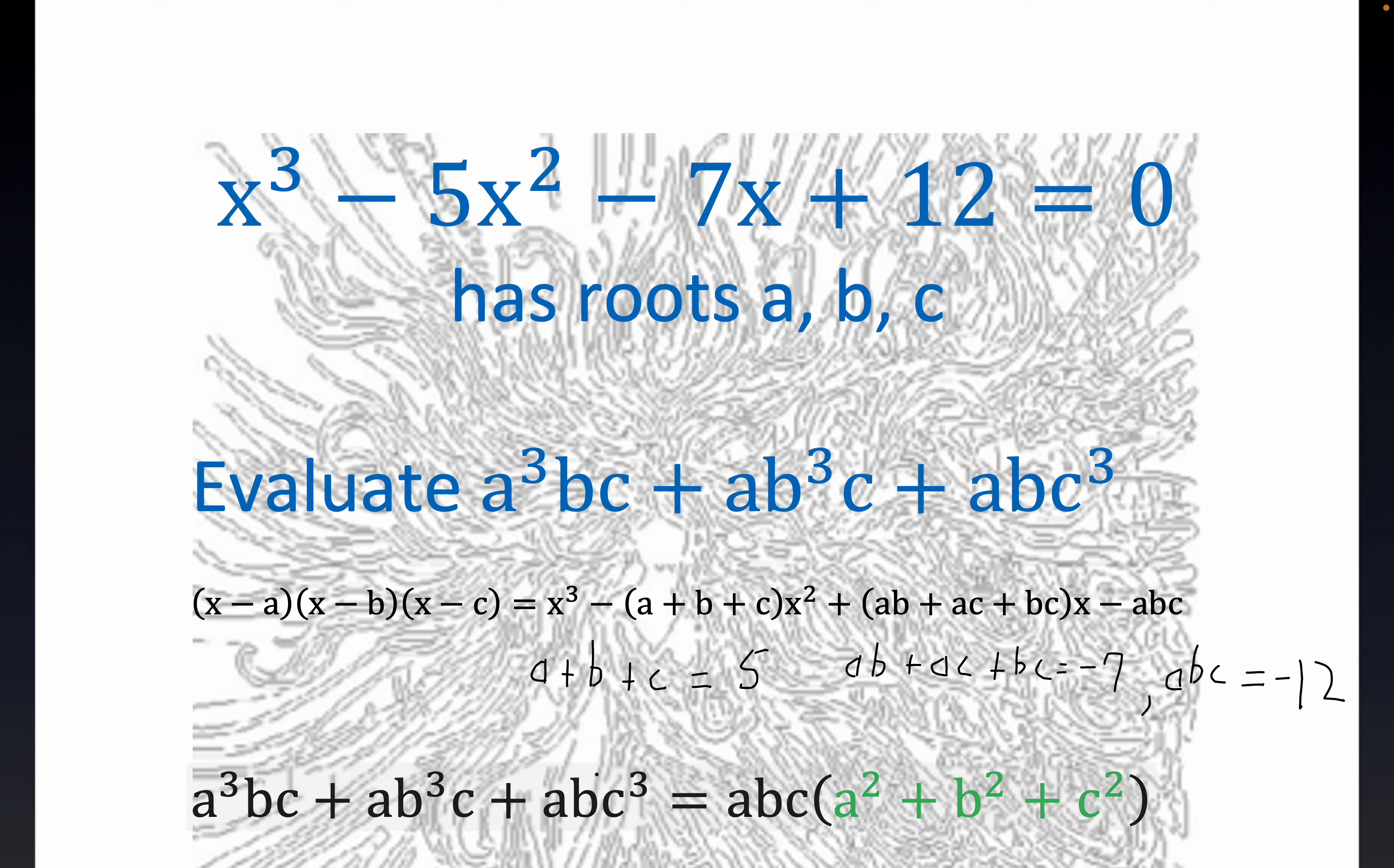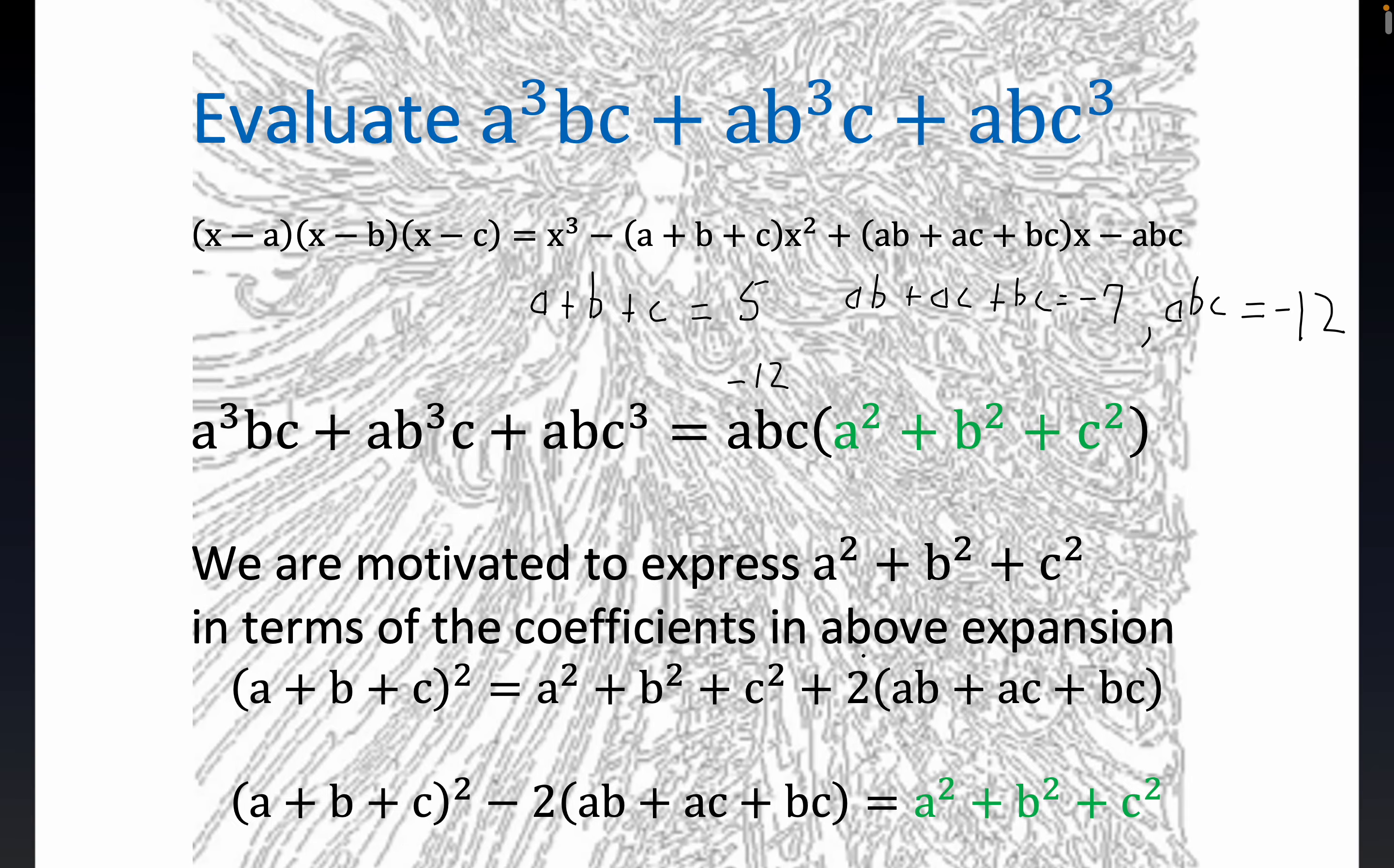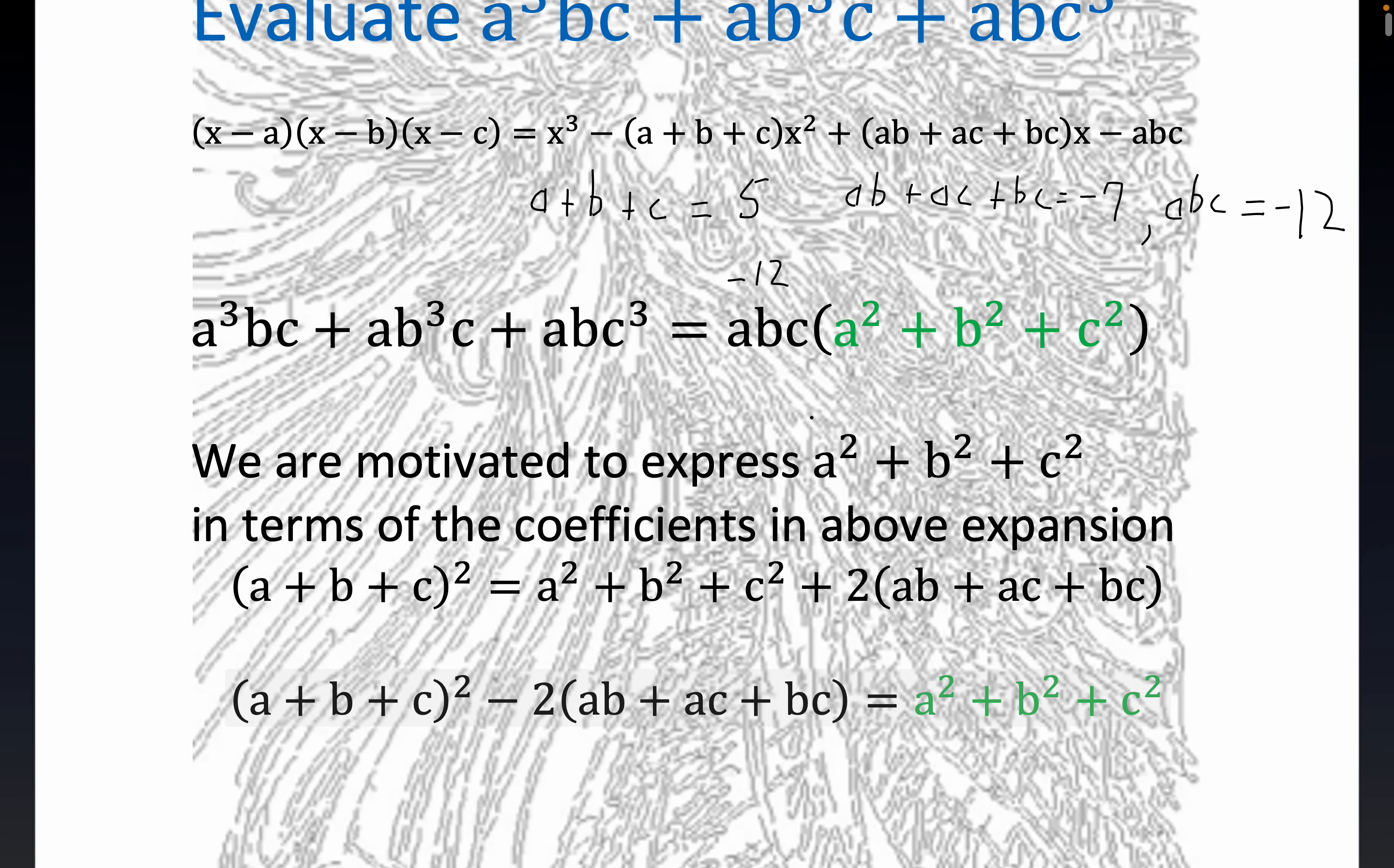Now, notice already, we know that ABC is equal to negative 12. And so, when you factor ABC out of this expression, you get this. So, we already know that minus 12 would be right here in place of ABC. We just need to know what A squared plus B squared plus C squared is. Notice A squared plus B squared plus C squared is not anything like really any of these coefficients. However, it turns out some algebra here will give us a way to determine the value of A squared plus B squared plus C squared indirectly.